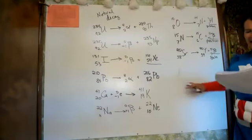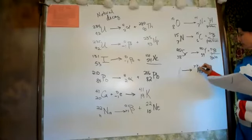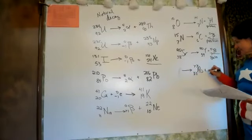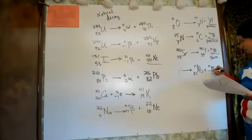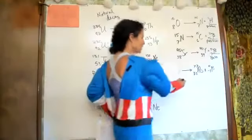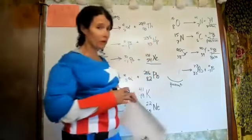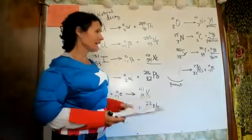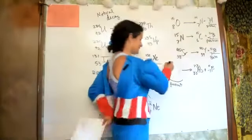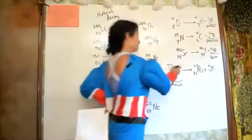Be careful how this one is worded: it tells you arsenic-77 is formed, meaning it is the product. It is beta decay, so we put the beta particle on the product side and figure out what we started with — they call this side the parent. So the parent has mass 77 and atomic number 32.